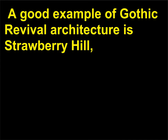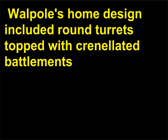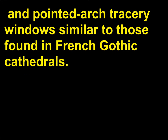A good example of Gothic Revival architecture is Strawberry Hill, the private home of Horace Walpole (1717–1797) in Twickenham, England. Walpole's home design included round turrets topped with crenelated battlements — tooth-like notches used for defense in medieval buildings — and pointed arch-tracery windows similar to those found in French Gothic cathedrals.